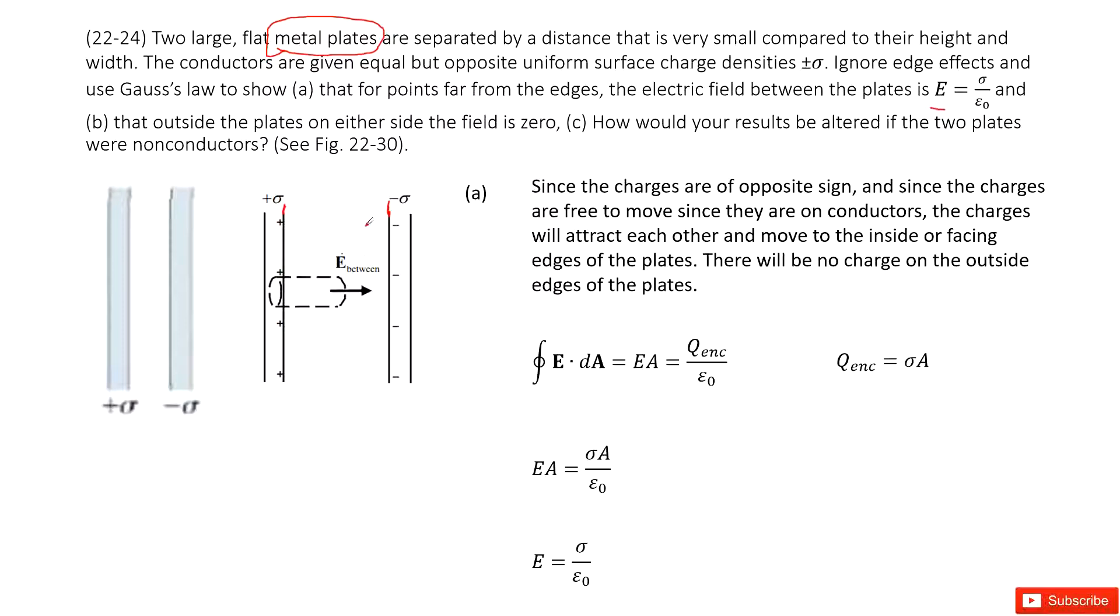This is positive charge, this is negative charge. They attract each other, so they locate as close as possible. And at this side there is no net charge. This is how the charge is distributed on the conductor.